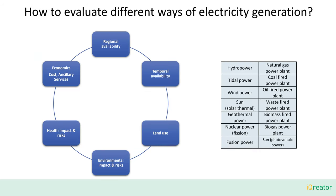Now, what are the key properties of electric power plants? In this video, we will look at regional availability, as not every type of power plant works very well in every place on Earth. Temporal availability, since some types of power plants have a fluctuating output. Land use, impacts and risks related to the environment and to health, mainly for the people living in the vicinity of the power plants. And finally, of course, the economics, which is the cost of the electricity produced, but also including ancillary services that come with some of the technologies.